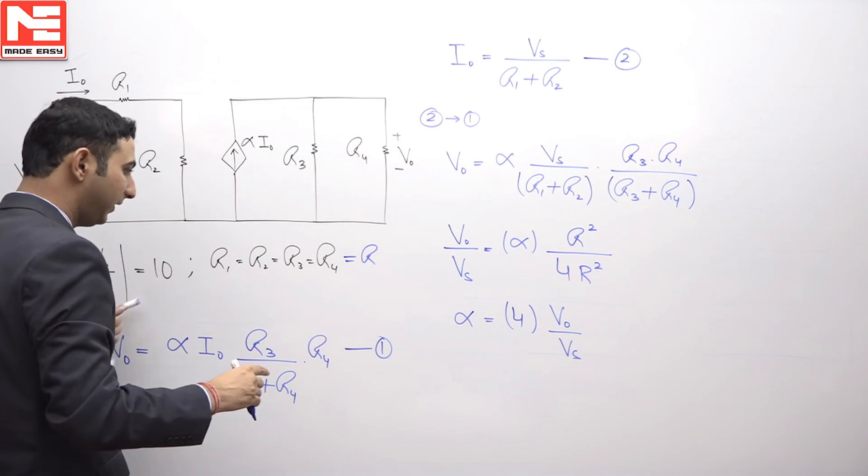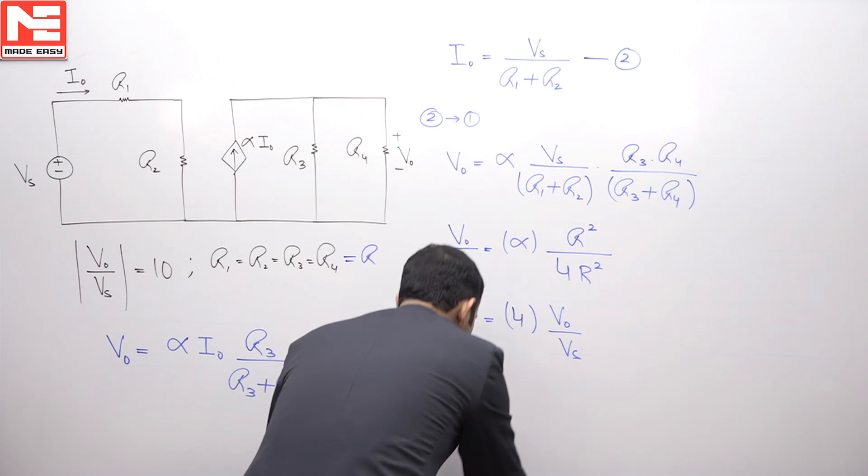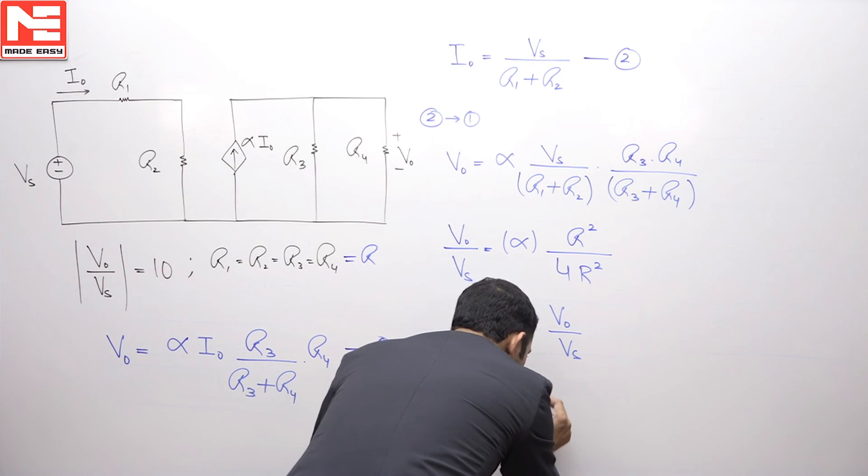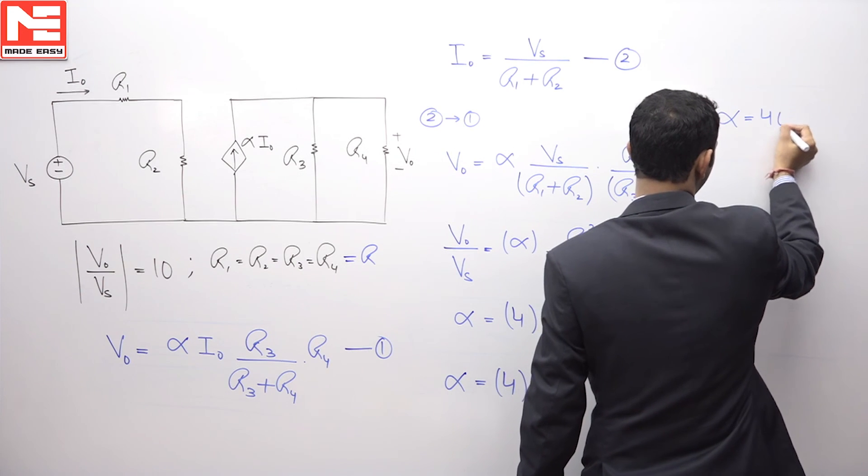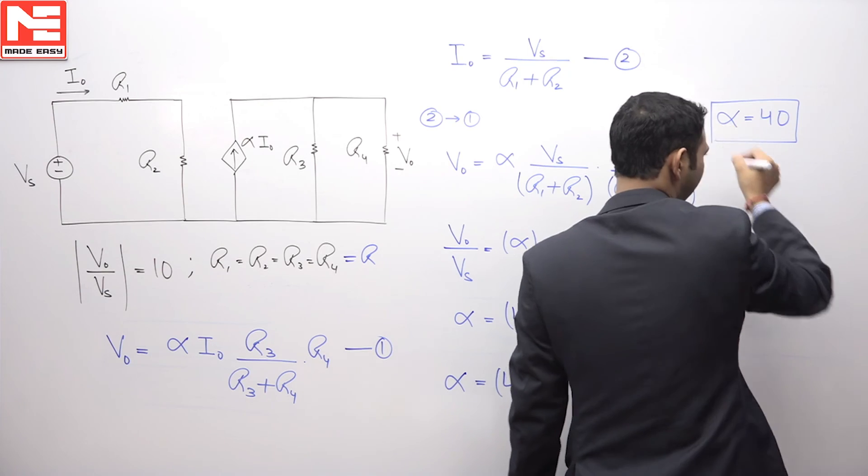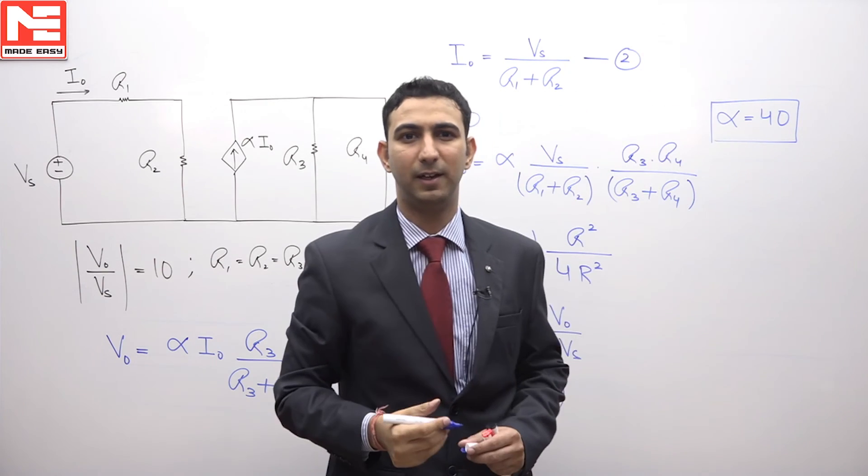In the question it is given that V naught by Vs is equal to 10, substituting it over here alpha will be 4 multiplied by 10. Hence, you can see alpha value is coming as 40 and hence, the option D is the correct option.